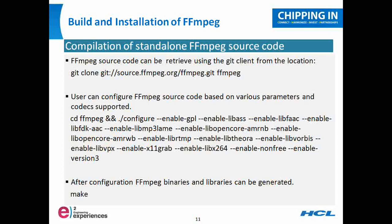Once you have downloaded the source code, you need to check your machine and see what the different dependencies for FFmpeg are. Before configuration and compilation, install all the dependencies. There could be a lot of dependencies depending upon the kind of codecs you want to use and the kind of platform on which you are compiling FFmpeg. Once you have taken care of all the dependencies, a user can configure the FFmpeg source code depending upon the requirement and the kind of codecs it wants to support.